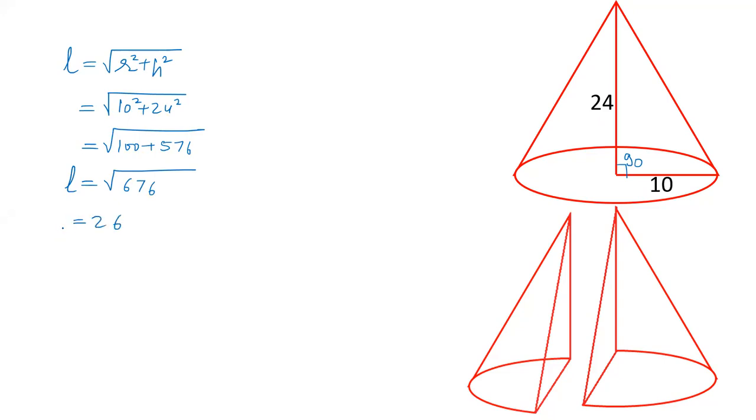The square root of 676 is 26. So the slant height of this cone is 26. And we can calculate the slant height with the help of Pythagoras triplet. This is 2 into 5, this is 2 into 12, so the slant height will be 2 into 13, that is 26.